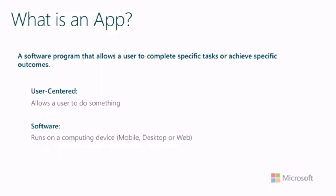The first thing we'll start with is figuring out who our users will be. But before we do that, let's define what exactly it is that we're building in this course and what a web app is. An app in general is a software program that allows a user to complete specific tasks or achieve specific outcomes. It has to be user-centered, and it runs on some sort of device. That distinction about what device an app runs on is what makes it a web app or a mobile app. We're focusing on web apps, which means creating things that a user will access via a web browser.